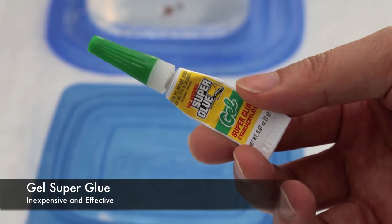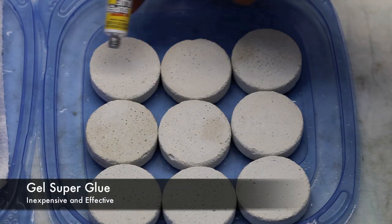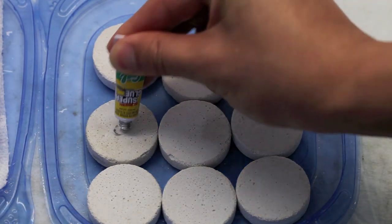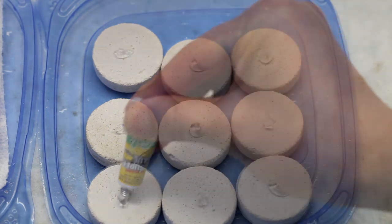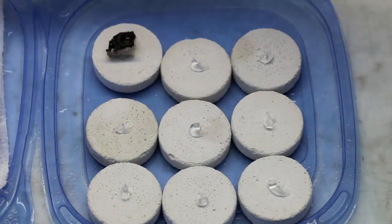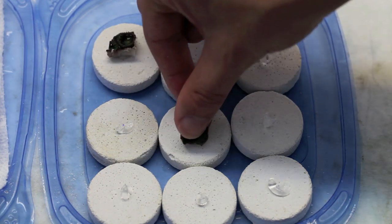A question that I get a lot is how long does it take the coral to dry once it's mounted. The answer that I give is not long at all. Basically, it only takes a few seconds and actually, cyanoacrylate gel super glue will cure underwater, so even if it isn't completely dry when you put it back in, it's not going anywhere.